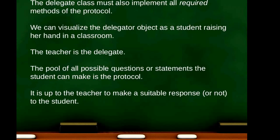Once all this hookup is done, we can think of the delegator object as a student raising their hand in a classroom. The student is the delegator object; the teacher is the delegate. Everything the student can say in the classroom — good and bad — is the protocol, and it's up to the teacher to make a suitable response. Some of these things are more critical than others: the more critical ones would be required methods of the protocol, and the less critical ones would be optional methods.